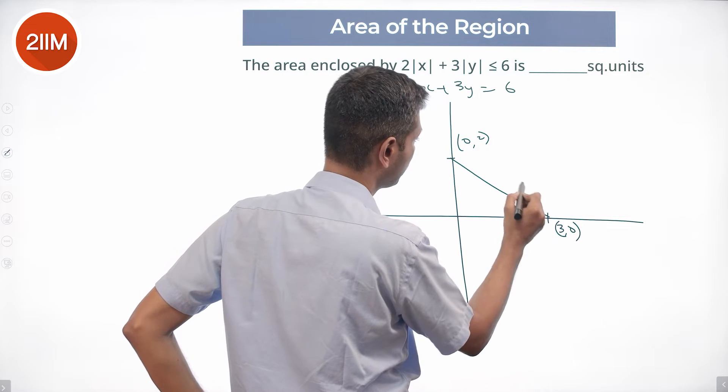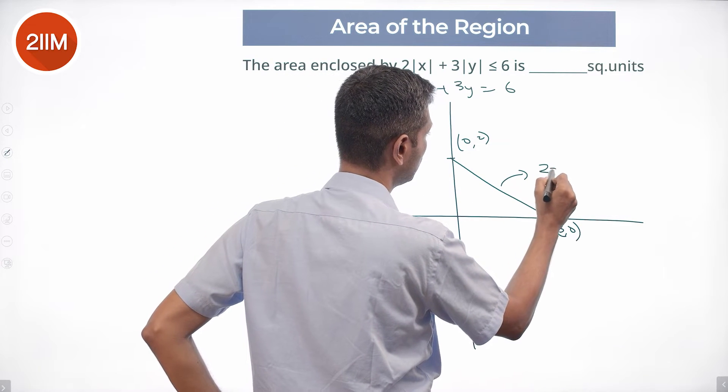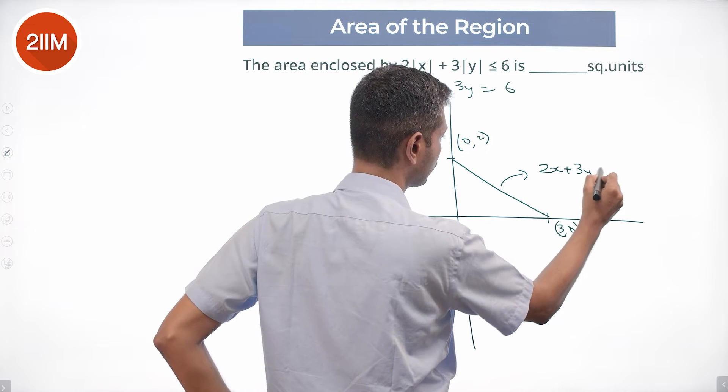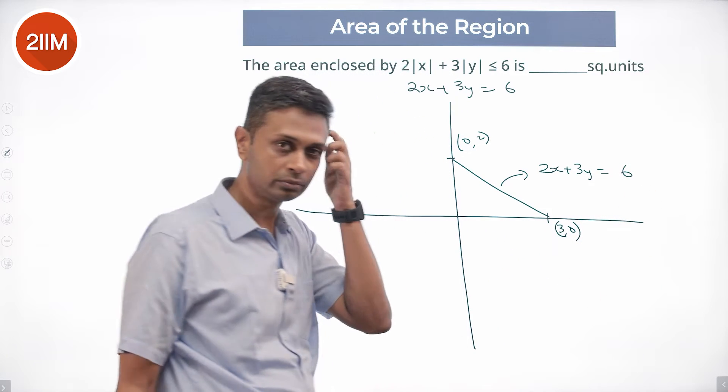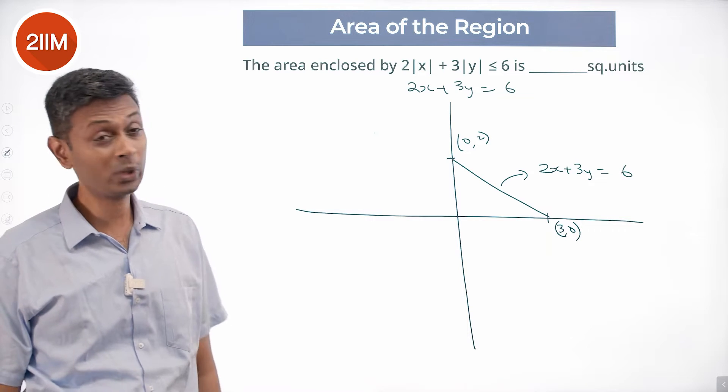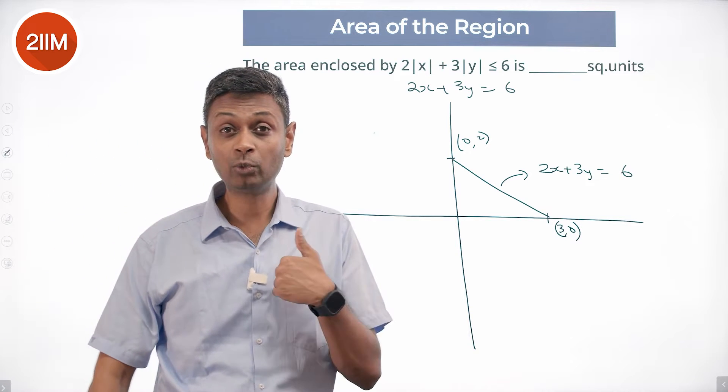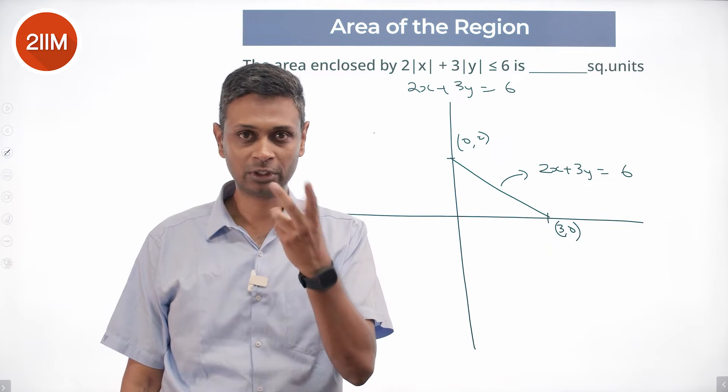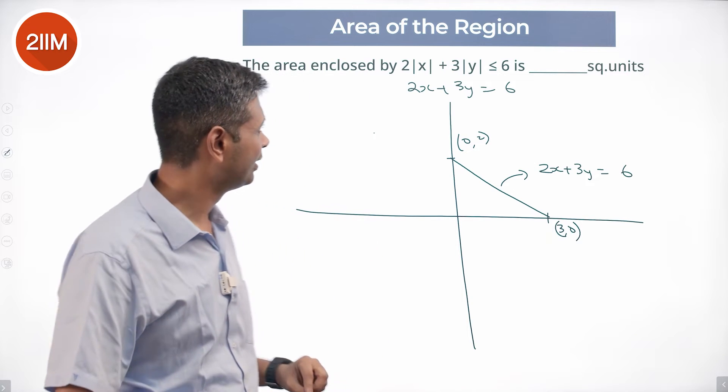We join this. This is the equation 2x plus 3y equals 6. Nice. And I say, hey nice, but this is 2x plus 3y equals 6. I'm dealing with modulus, so plus and minus both will work.